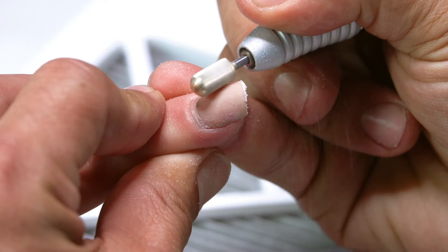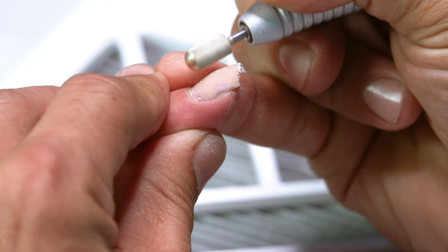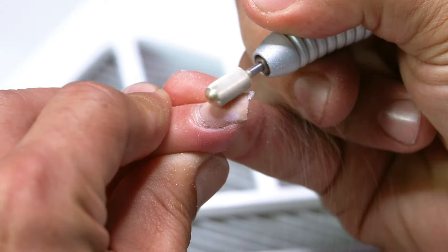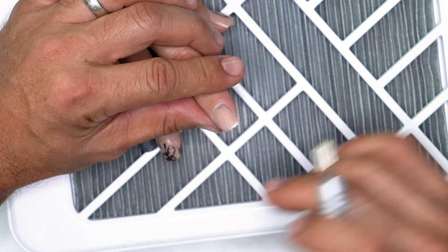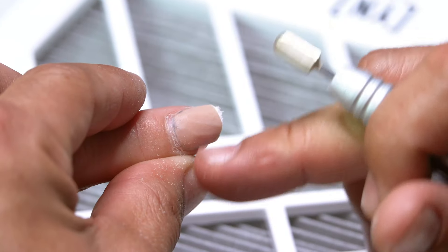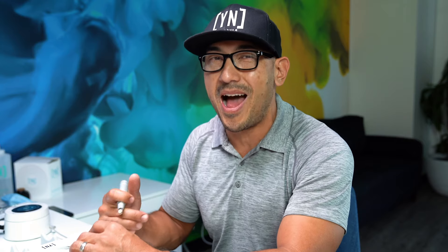So I'm using zone three, I'm coming towards myself, and I'm going to continue to work in one direction. Now, here's the thing. As you can see, the nail is getting quite thin. So once it gets to this point, I'm not going to start digging into the surface of the acrylic.